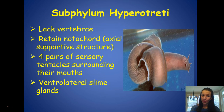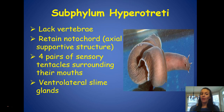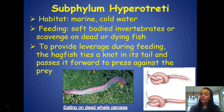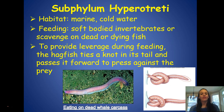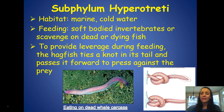Hagfish lack vertebrae but have a notochord for structure. They have four pairs of sensory tentacles around their mouth and a ventrolateral slime gland — they are very slimy animals. Their habitat is typically marine and they prefer cold water. They feed on soft-bodied invertebrates or scavenge dead and decaying fish. Interestingly, to provide leverage while feeding, they actually tie themselves in a knot and press it forward against their prey.